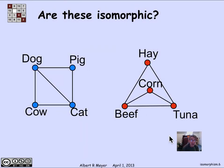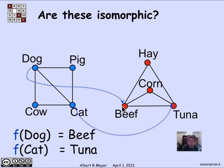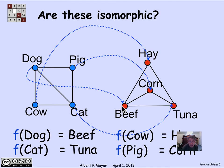Here are two graphs, and I claim they are isomorphic. On the left we have animals — dog, pig, cow, cat — and on the right we have animal foods — hay, corn, beef, tuna. I'm defining a bijection f from the left vertices to the right vertices. f(dog) = beef, f(cat) = tuna (cats eat tuna), f(cow) = hay, and f(pig) = corn. This is a perfect correspondence between the four vertices on the left and the four vertices on the right.